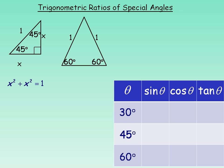So x squared plus x squared equals 1 squared, or 1. x squared and x squared add to 2x squared, so this simplifies to 2x squared equals 1. Solving for x, we divide both sides by 2 and get x squared equals one half. Taking the square root of both sides, we get x equals the square root of one half. The square root of 1 is 1 in the numerator, and the square root of 2 is root 2.